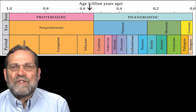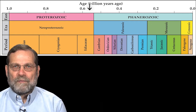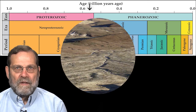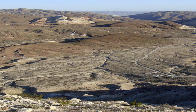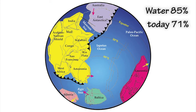By 570 million years ago, the glaciers of Snowball or Slushball Earth had retreated, and Earth's climate became warm. The continents were primarily low-lying deserts and alluvial plains. Rising sea levels encroached upon these areas and covered about 85% of Earth's surface. Today, water covers only about 71%. Without continental landmasses at the poles, oceans circulated freely and ice formation was negligible.